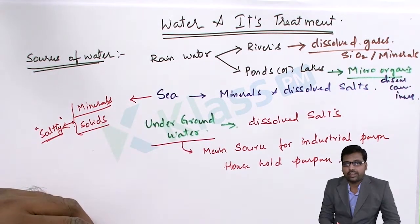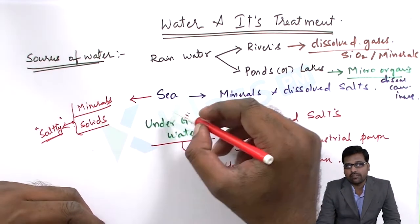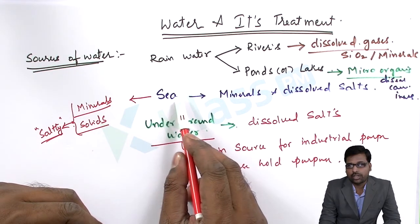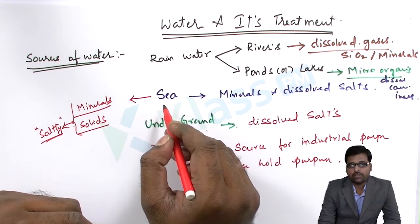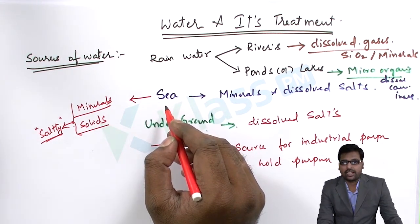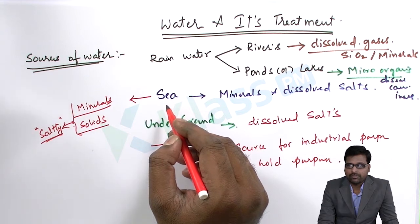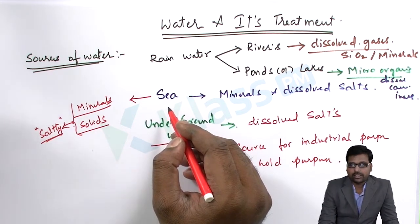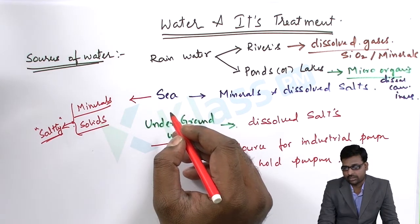In countries where water scarcity exists, those countries purely depend on seawater and they use the process of reverse osmosis to desalinate it. Desalination is a technique and the main principle behind it is reverse osmosis. We will come across these methods in later stages.